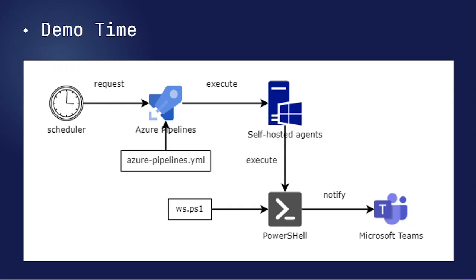Today I will show you how to update Windows on a self-hosted agent. The scenario is like this: when you install a self-hosted agent on your machine — like a VM or any cloud — to customize your software for building code instead of using Microsoft Hosted, sometimes Windows will ask to update automatically. But we don't want to run Windows Update on the self-hosted agent because sometimes it will restart by itself and the pipeline will be broken or not working.